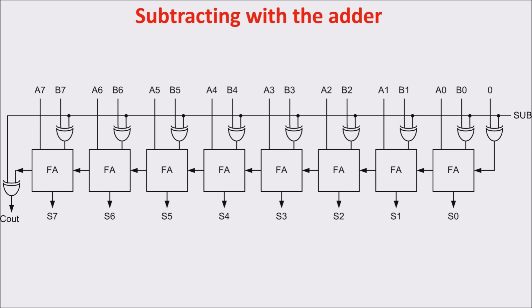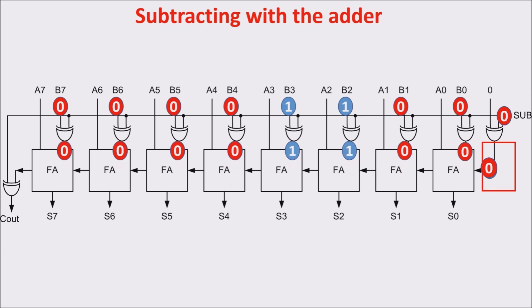This is how a simple CPU can subtract using an adder. We have 8 full adders, which have inputs A directly connected with the first byte, and inputs B connected through a XOR to the second byte. If I want to subtract, I put 1 on the line SUB. A XOR with an input at 1 inverts the bit of the other input. Now, I have to add 1, and this is obtained putting at 1 the carry-in of the least significant bit.